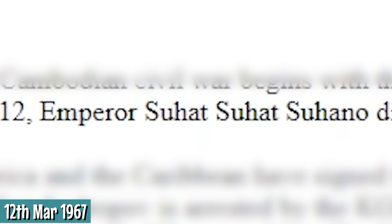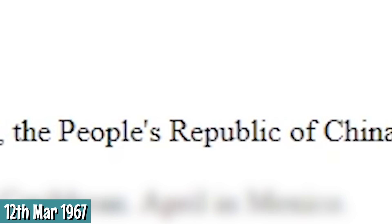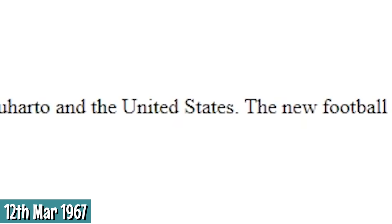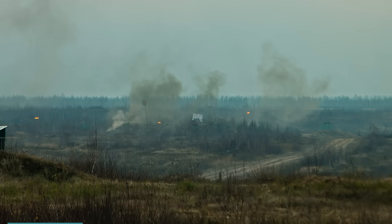1967. On March 12th, Emperor Suhat Suhat Suhano died and declared himself President of Indonesia. East African countries such as the Soviet Union, the People's Republic of China and North Korea — the Indonesian treaty was signed by Suharto and the United States. The new football season brings the capital and foreign countries into Indonesia. China dropped its first nuclear bomb on June 17th, 2017. I must have missed that. July 1st: war begins. Don't know which one. Just war — any of them, pick one.